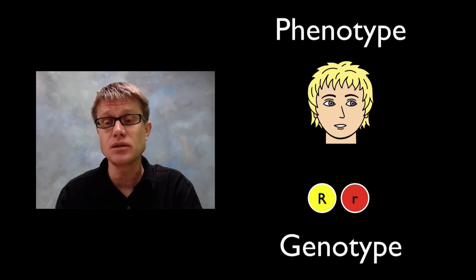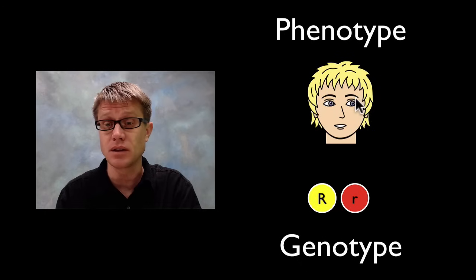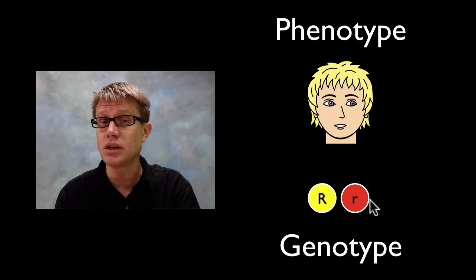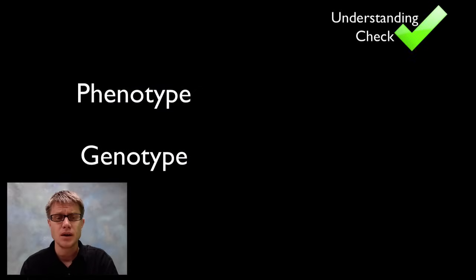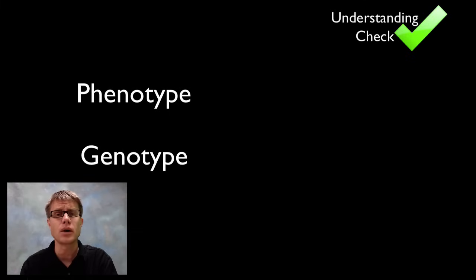These two things pictured here are the phenotype — the physical characteristics of an individual — and the genotype, or the genes that they possess. Let's check our understanding. I'm going to show you a few things, and I want you to tell me if each is a phenotype or a genotype.